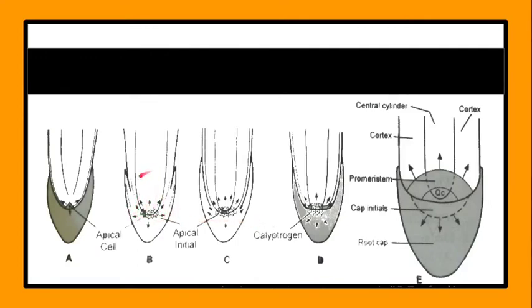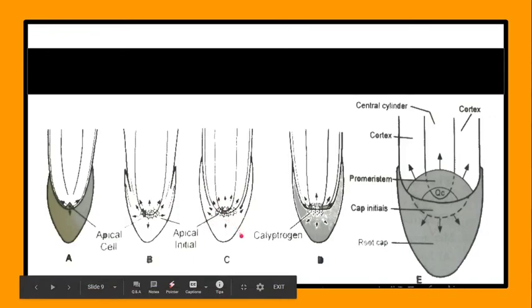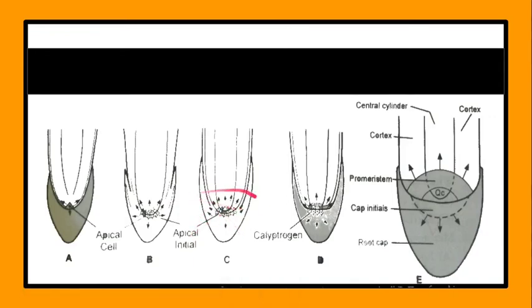In type B of gymnosperms there are two groups of initials. One produces the vascular cylinder and the second forms the cortex, epidermis, and root cap. In type C there are three group initials which produce vascular cylinder, cortex, epidermis, and root cap.